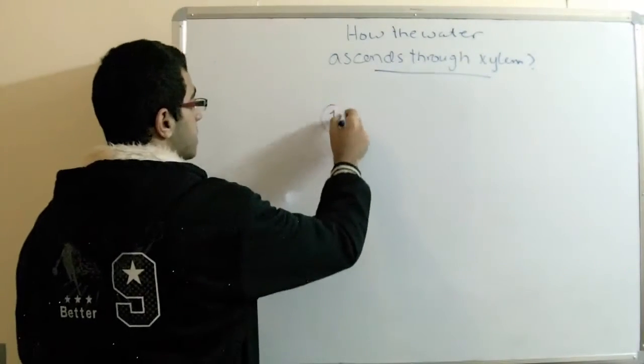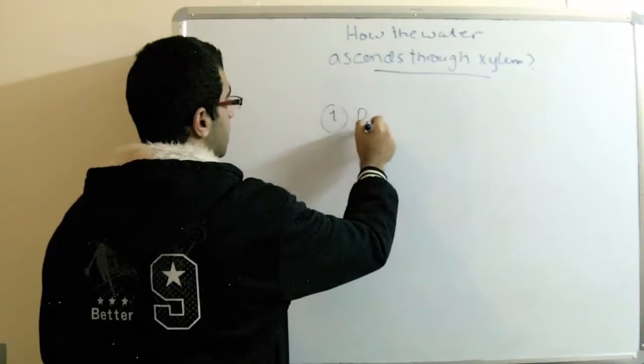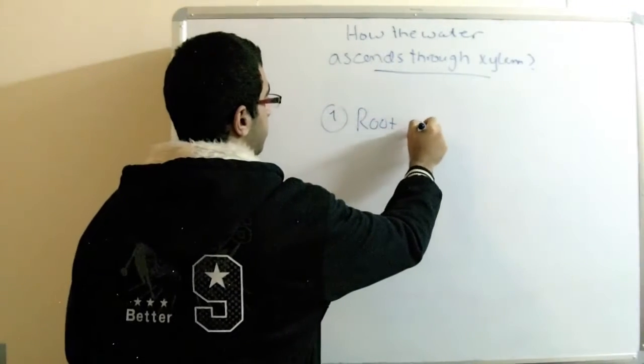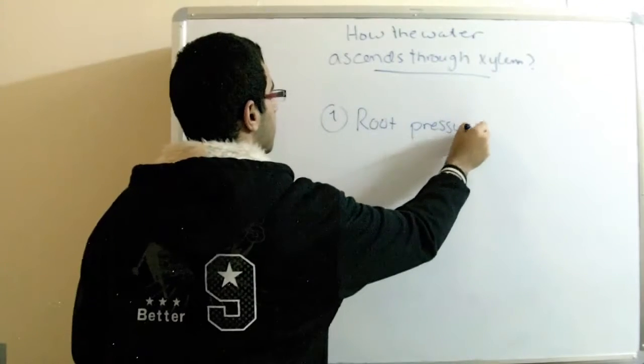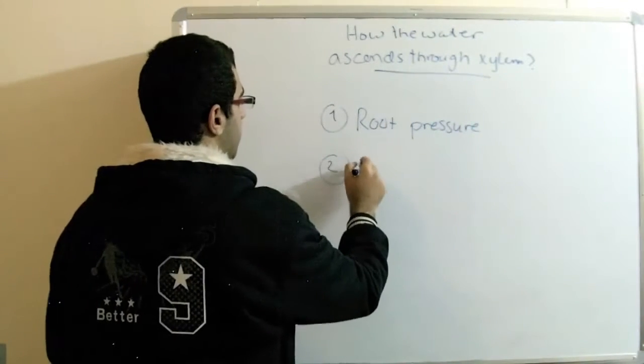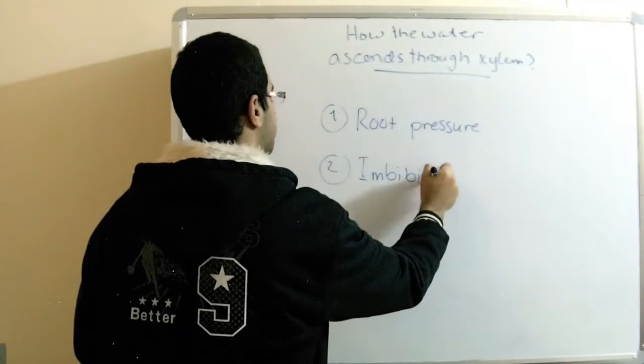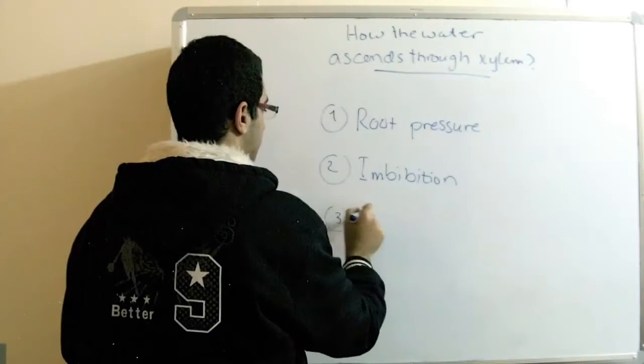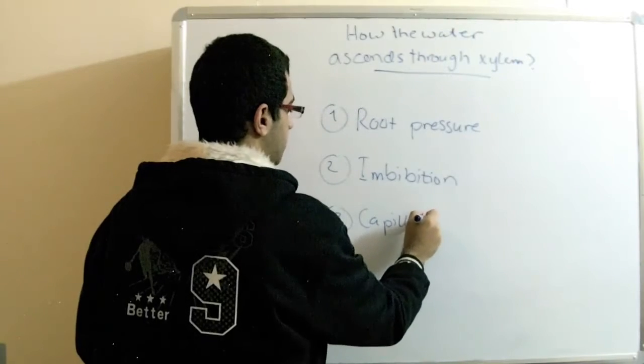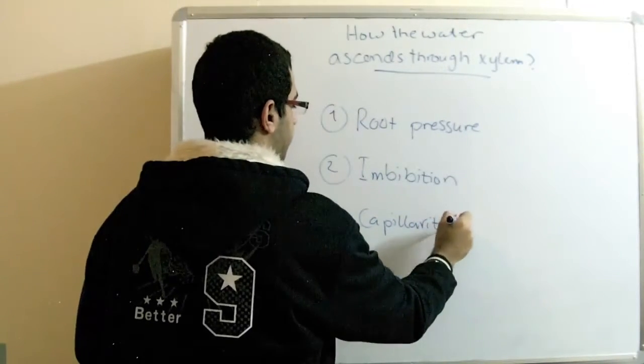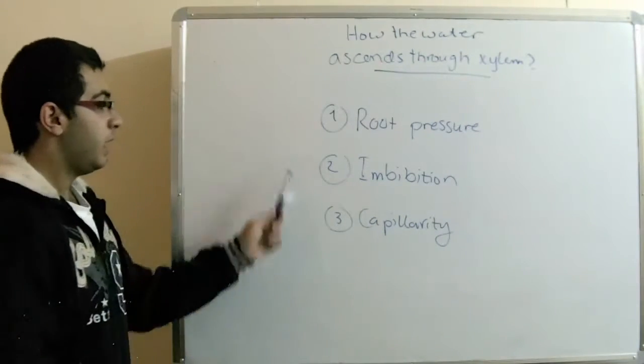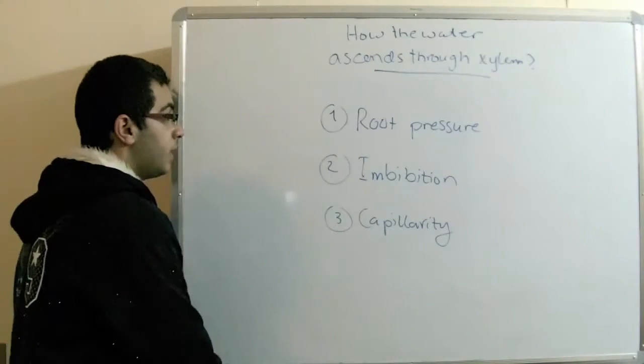At first people had some assumptions about this. They said that it may be the root pressure, or it may be imbibition, or capillarity. But all of the three are wrong. Why they are wrong?